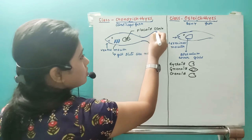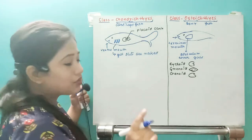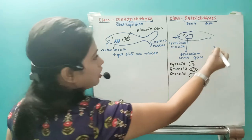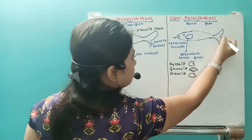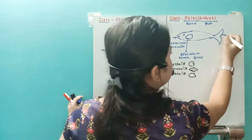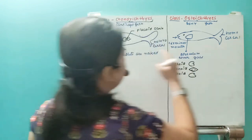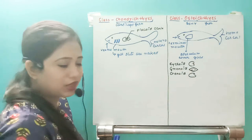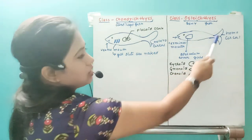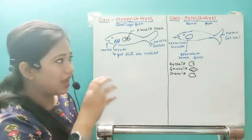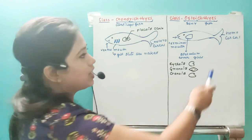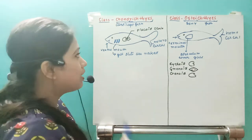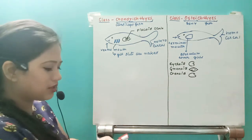Regarding the caudal fin: in Chondrichthyes the last caudal fin is heterocercal, meaning the two lobes are asymmetrical. In Osteichthyes the last caudal fin is homocercal, meaning the two lobes of the caudal fin are completely symmetrical.